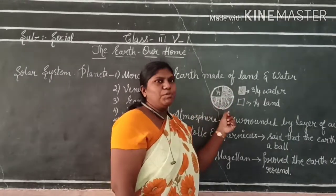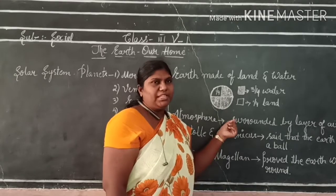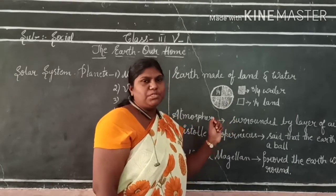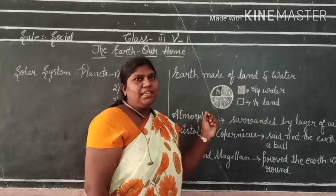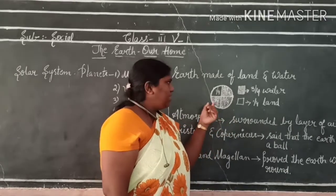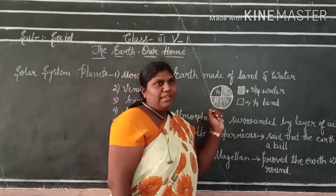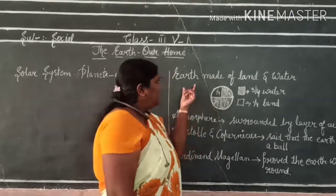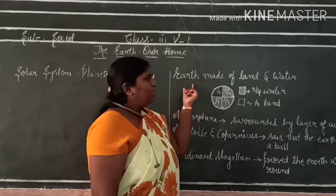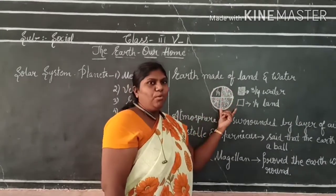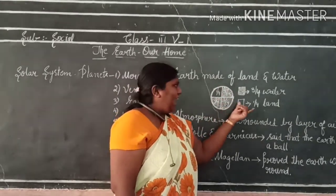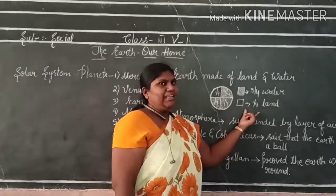The land forms include mountains, plateaus, and plains — these all come under land forms. So the Earth is made up of water and land.